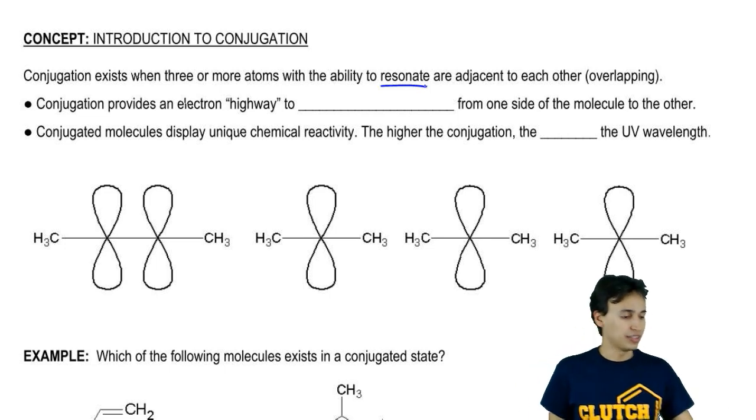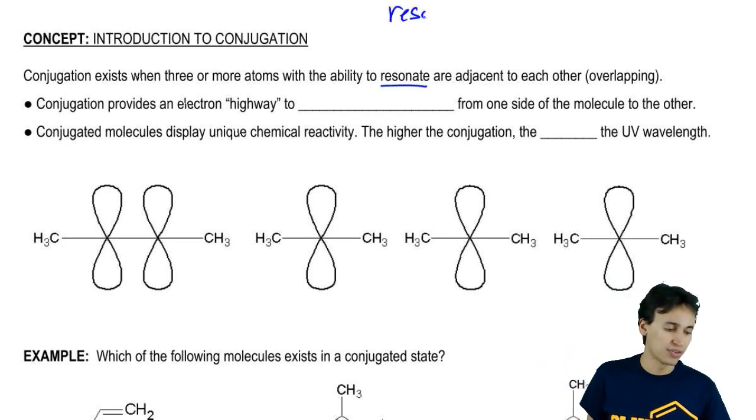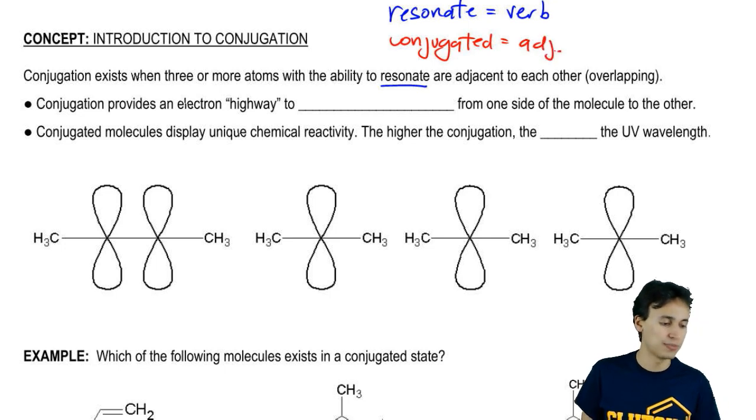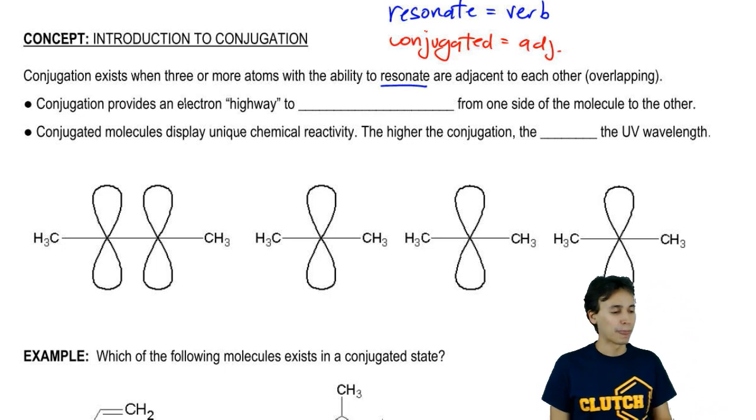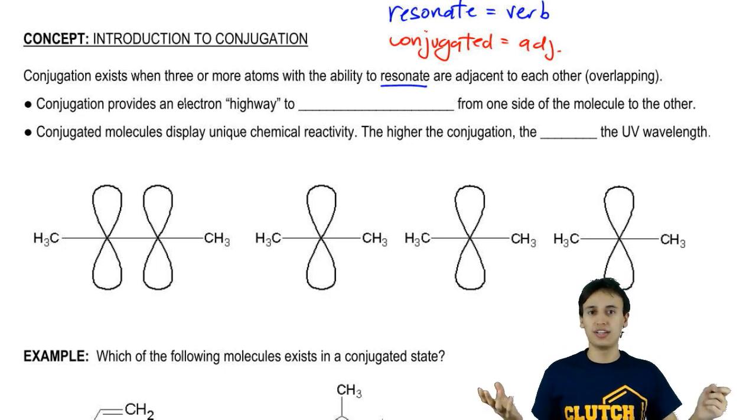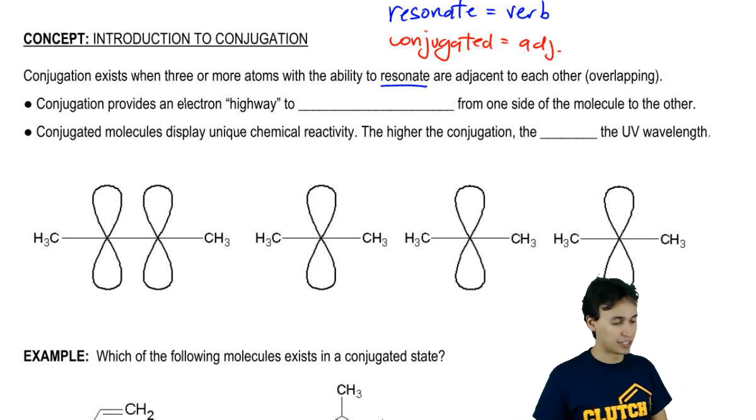Whereas to resonate, resonate is a verb. If you resonate something, that's an action. Conjugation or conjugated would be the adjective that describes that you can do that. I don't want to get too much into grammar, but basically just saying that something that is conjugated has the ability to resonate. They're really similar words for the same idea.